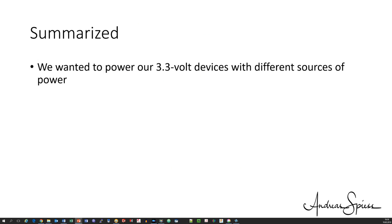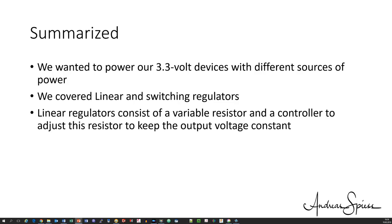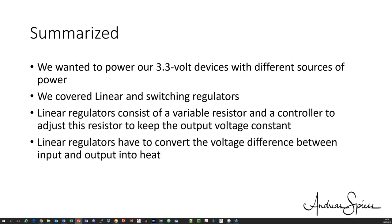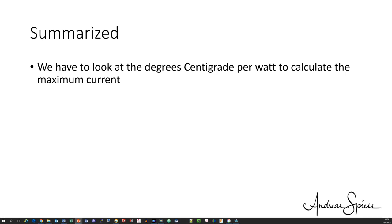We wanted to power our 3.3 volt devices with different sources of power. If we do not use LIFEPO4 batteries, we need some voltage regulation. We covered the two different principles for control of voltage, linear regulators and switching regulators. Linear regulators consist of a variable resistor and a controller to adjust the resistor according to the needs of the load to keep the output voltage constant. We smoked a small resistor to understand that linear regulators have to convert the voltage difference between input and output into heat. This is why their efficiency is not very high. And for big differences between input and output voltages at higher currents, we need big heat sinks to dissipate the heat produced. Input and output current is always the same for linear regulators. We also saw that we have to look at the degrees centigrade per watt to calculate the maximum current. Reading the title with the maximum current is not sufficient.